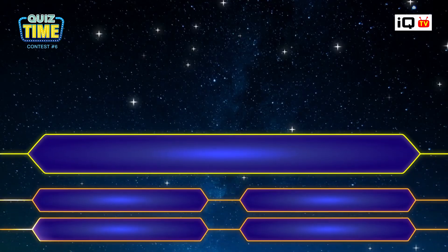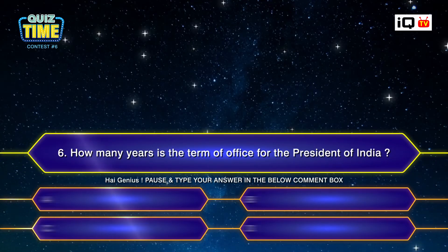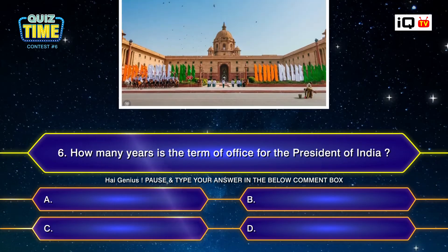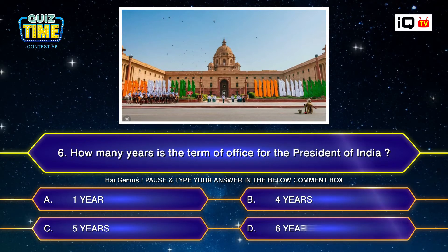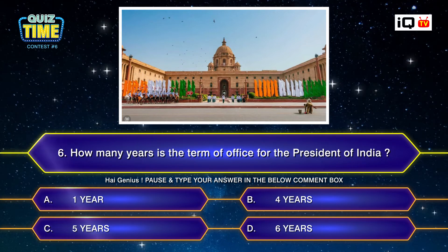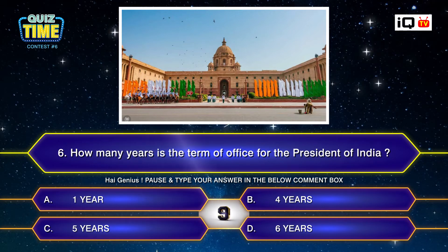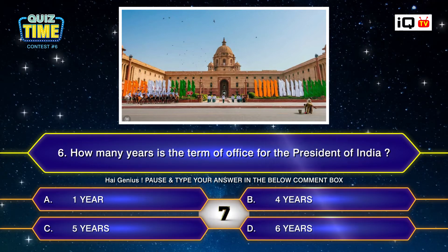Number six: How many years is the term of office for the President of India? A. 1, B. 4, C. 5, D. 6. Your time starts now. Type your answer down.